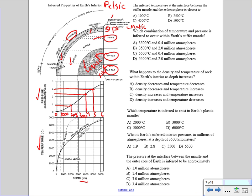For the temperature graph, you do the same thing: find the depth in kilometers, go up to the line, and read across. For example, at a depth of 3,000 kilometers the temperature is about 5,000 degrees Celsius. At 1,000 kilometers it's a little more than 3,000 degrees Celsius. You have to be careful with the questions since they use various diagrams of Earth's layers.